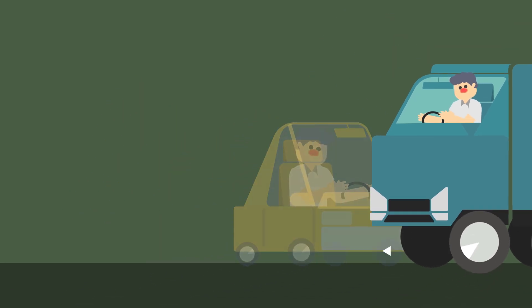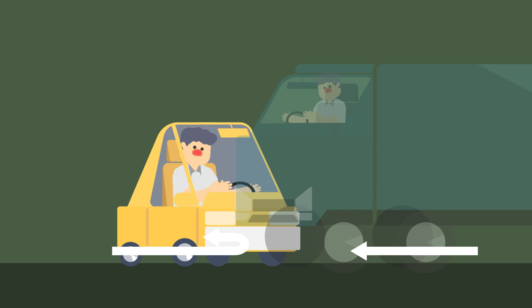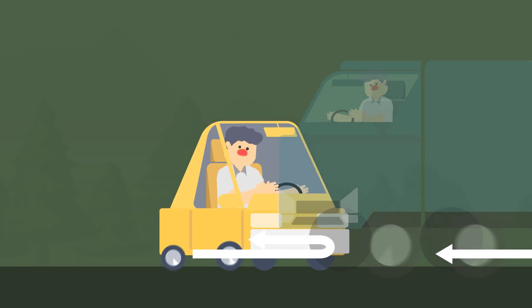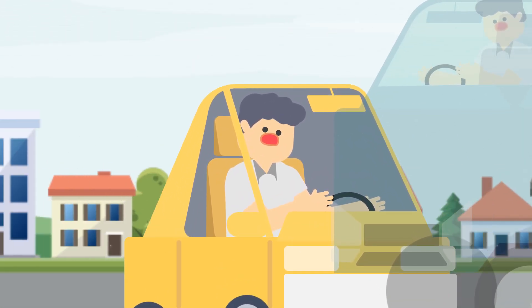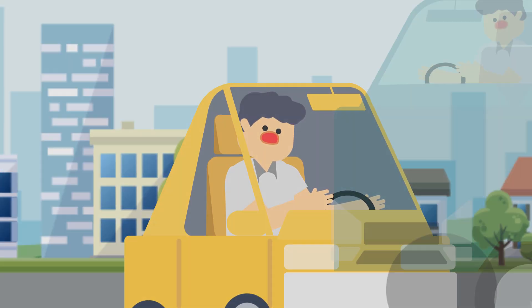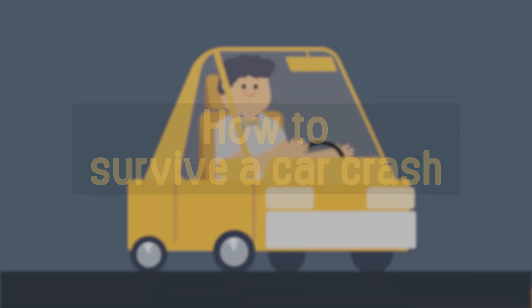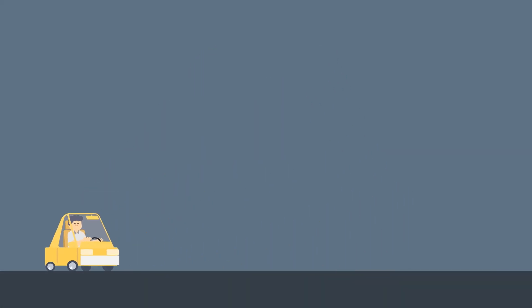Of the two, the truck driver experiences a small change in speed. But the driver of the small vehicle experiences a large change in speed. This means that the effect of the impact on the driver of the small vehicle is greater than on the driver of the truck. Now, shall we get down to the business of finding out how to survive a car crash?